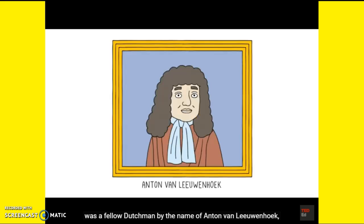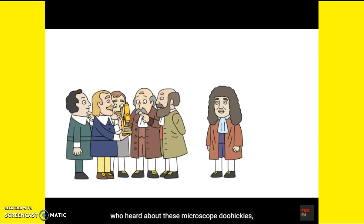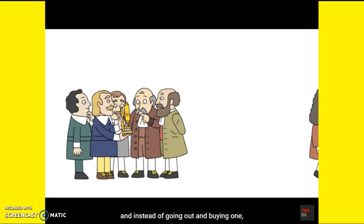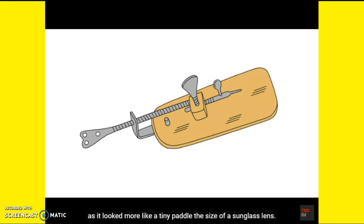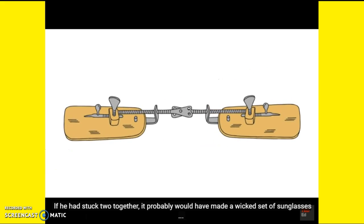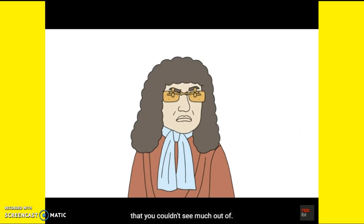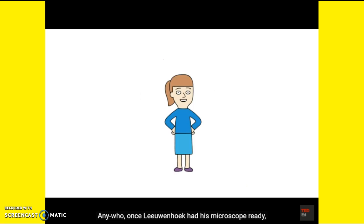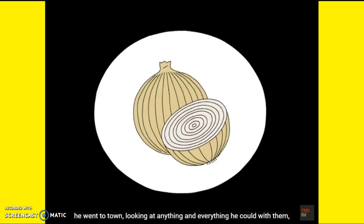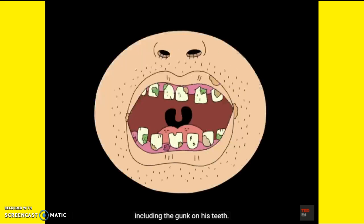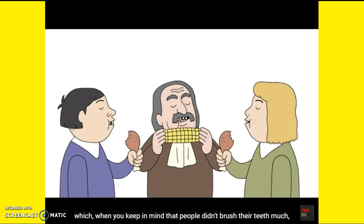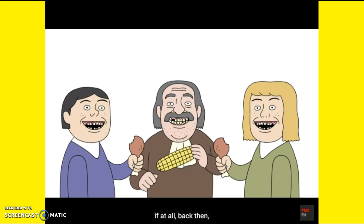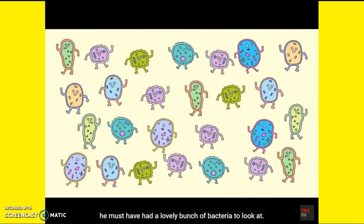One such person was a fellow Dutchman by the name of Anton van Leeuwenhoek, who heard about these microscope doohickeys and instead of going out and buying one, decided to make his own. It was a strange little contraption — it looked more like a tiny paddle the size of a sunglass lens. Once Leeuwenhoek had his microscope ready, he went to town looking at anything and everything he could, including the gunk on his teeth. He actually discovered bacteria by looking at dental scrapings, which — when you keep in mind that people didn't brush their teeth much back then — meant he had a lovely bunch of bacteria to look at. When he wrote about his discovery, he didn't call them bacteria but called them animicules, because they looked like little animals to him.